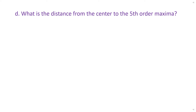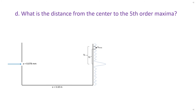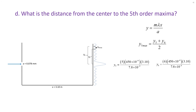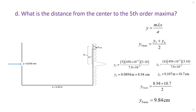Now we are asked to find the distance from the center to the fifth order maxima. The equation used to solve for y for single-slit diffraction only applies to distances from the center to the minima, not the maxima. Because of this, in order to find the distance from the center to the fifth order maxima, we need to find the average of the distances for y5 and y6, because the fifth order maxima is in between those two minima, as shown in the diagram. We use the equation from part C to solve for y5 and y6 and take the average. Once averaged, we find that the fifth order maxima is 9.84 centimeters from the center.